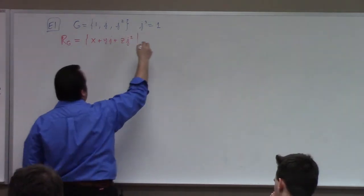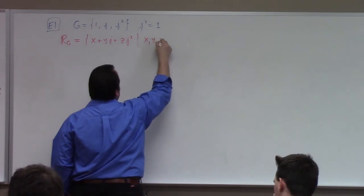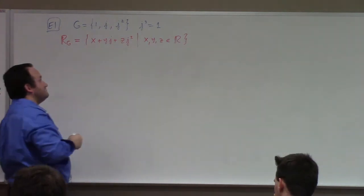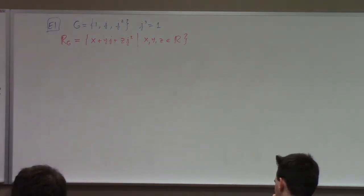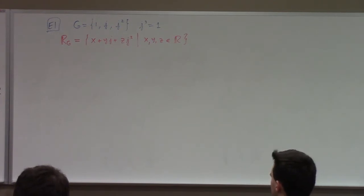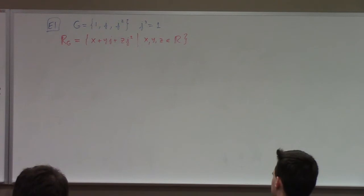And that's going to be things of the form X plus YJ plus ZJ squared, such that X, Y, and Z are in the reals. Now, that's a so-called group algebra. It is a ring, which somehow is naturally attached to G — it has sort of formal real linear combinations of the group elements.